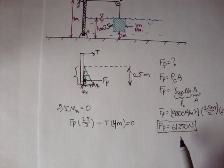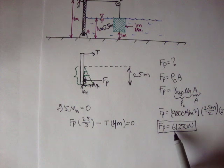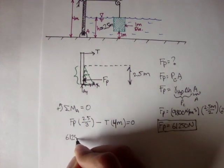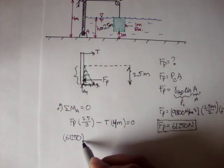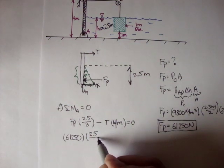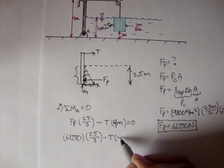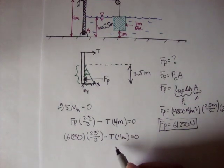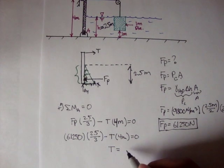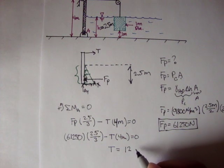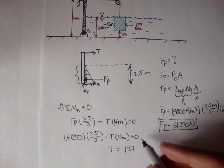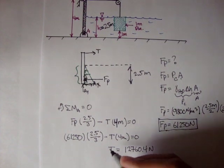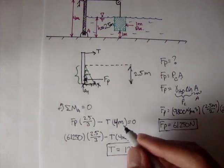And if we plug in Fp is equal to 61,250 Newtons, we can say 61,250 times 2.5 divided by 3 minus the tension, which we don't know but we can figure out, is equal to zero, right? And if we solve for T, that's just algebra, T we get is about 12,760.4 Newtons. So that's the tension.